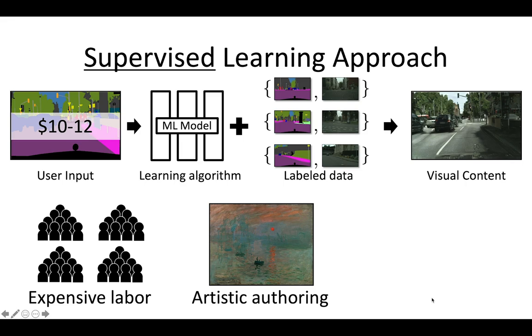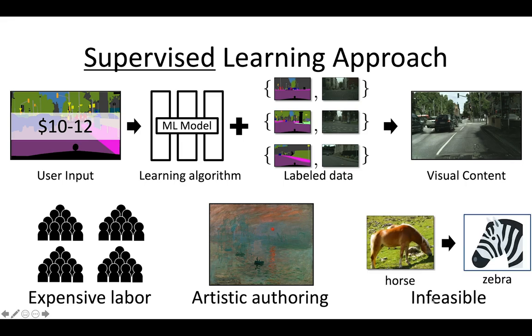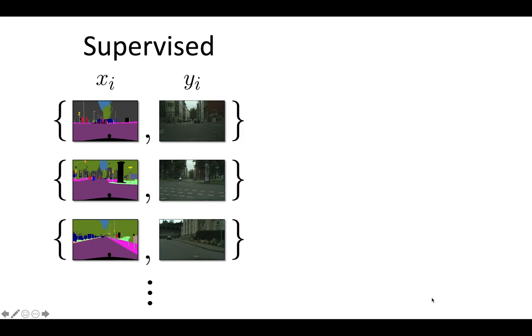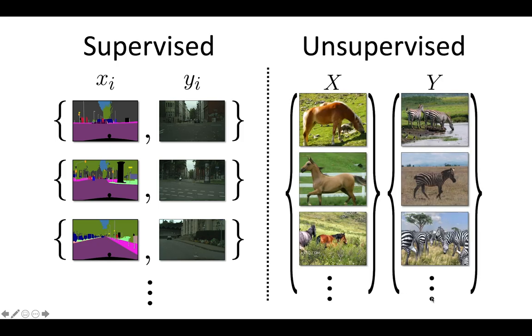To make things even worse, for many creative applications the annotation is infeasible. For example, if you want to translate a horse to a zebra, you can't just show the input to the zebra and ask it to do the same pose. Therefore, it would be desirable to go beyond supervised learning and costly annotation to develop an unsupervised learning method.